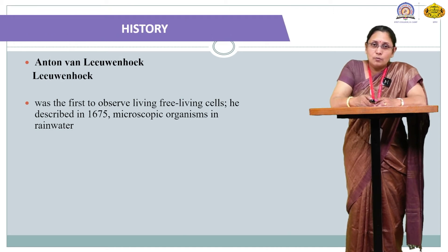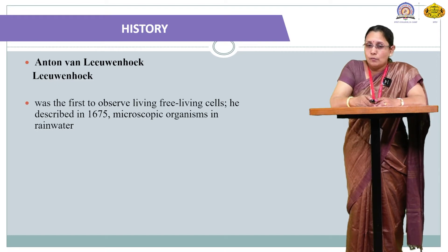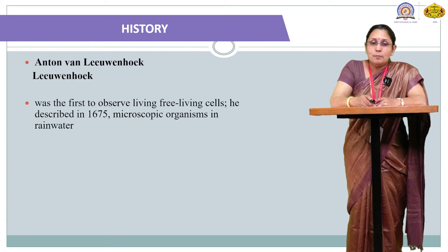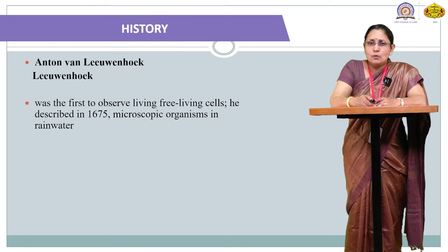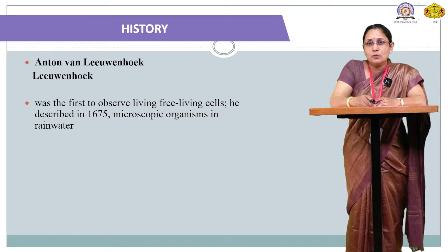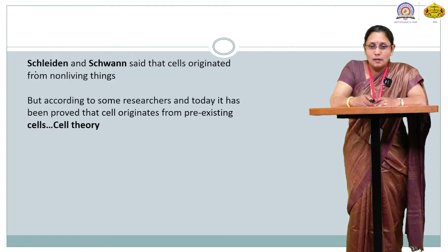Another name related to the history and observation of the cell is Anton van Leeuwenhoek. Leeuwenhoek was the first to observe living, free cells — he described microscopic organisms from rainwater in 1675. Using a microscope, he first observed a moving organism and labeled it as a cell.